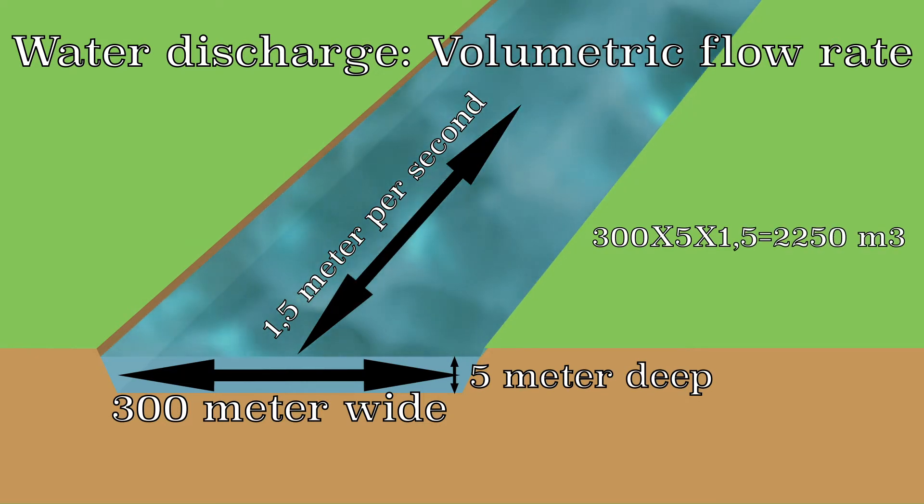This is written as a discharge of 2250 cubic meters per second and corresponds to a discharge of 2.25 million liters per second. This is approximately the average water discharge from the Rhine and is called the volumetric flow rate.